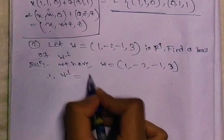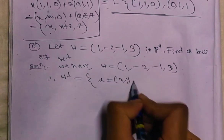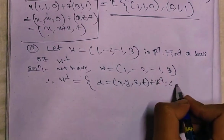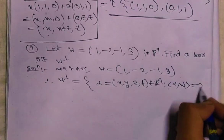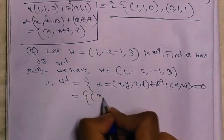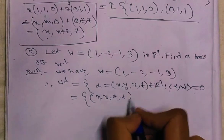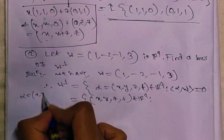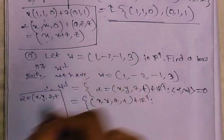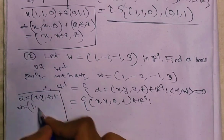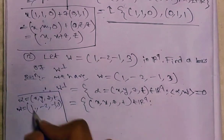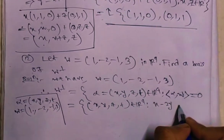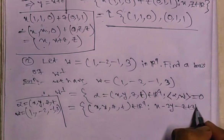Therefore W⊥ equals the set of alpha equals (x, y, z, t) belonging to R⁴ such that the inner product of alpha and W equals zero. We have alpha = (x, y, z, t) and W = (1, -2, -1, 3), so the inner product of alpha and W equals x - 2y - z + 3t = 0.